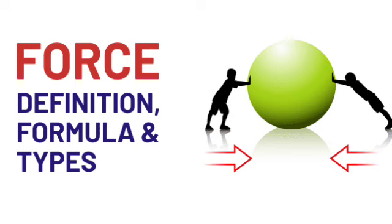Forces act due to interaction. Let us understand interactions with the help of Activity 3. Stand behind a stationary car. Will the car move because of your presence? Now push the car. Does the car move when you push it? In the first situation, you did not apply any force on the car, hence there is no interaction between you and the car. In the second situation, force on the car is applied by you, due to which interaction between you and the car took place. Interaction between two objects is necessary for force to come into play.